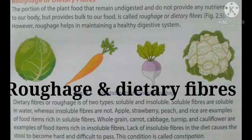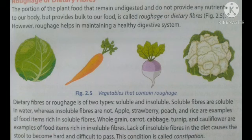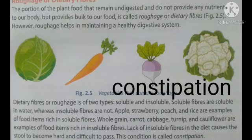Now, roughage and dietary fibers. The portion of plant food that remains undigested and does not provide any nutrients to our body but provides bulk to our food is called roughage or dietary fibers. Roughage helps in maintaining a healthy digestive system. Dietary fibers are of two types: soluble and insoluble. Soluble fibers are soluble in water whereas insoluble fibers are not. Apple, strawberry, peach and rice are examples of food items rich in soluble fibers. Whole grain, carrot, cabbage, turnip and cauliflower are rich in insoluble fibers. Lack of insoluble fibers causes the stool to become hard and difficult to pass, a condition called constipation.